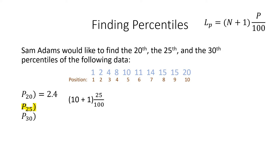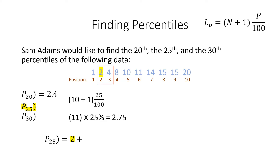Now onto the 25th percentile — this one is a little bit tricky. We will take our n plus 1 and multiply it by the percentile: 10 plus 1 times 25 over 100. This gives us 2.75. 2.75 is somewhere between the second and third position. We will take the number in the second position, 2, and add the 0.75 that we calculated from the above percent.